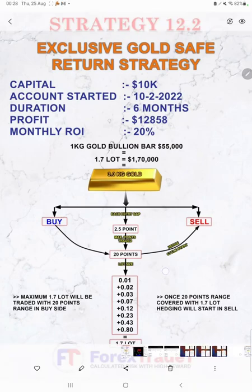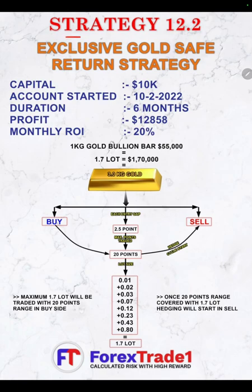Starting with the first part: Strategy Number 12.2, the exclusive Gold Safe Return Strategy, was started with a ten thousand dollar capital on the 10th of February 2022. Within a six-month period, twelve thousand eight hundred fifty-eight dollars profit was achieved, and every month we are getting approximately 20% ROI on this strategy. We will understand one by one how this strategy works.